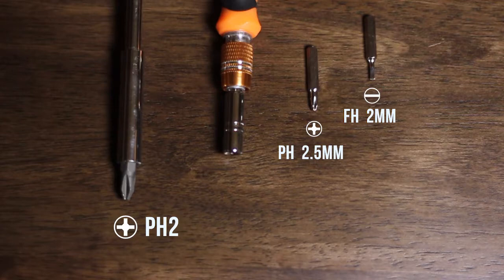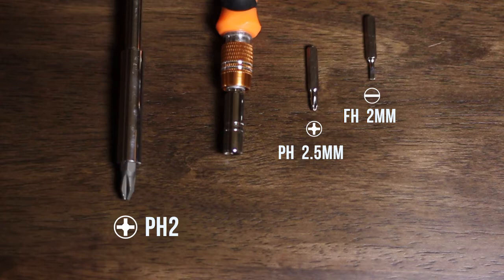To swap the Sky 3 board, begin with a Philips size 2 screwdriver and two precision bits: one Philips 2.5mm and the other a 2mm flathead.